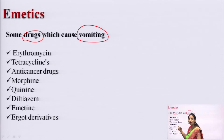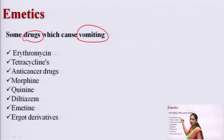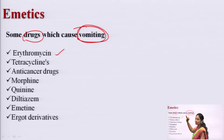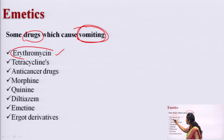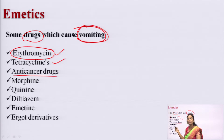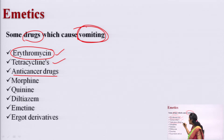Drugs that can induce vomiting include: erythromycin, which is an antibiotic used to treat microorganisms; tetracycline, also an antibiotic; anti-cancer drugs — patients taking chemotherapy experience increased vomiting; morphine, an opiate narcotic drug which can induce vomiting; quinine, an anti-malarial drug that can induce vomiting in patients; and diltiazem, a calcium channel blocker used to treat hypertension, which increases vomiting sensation.